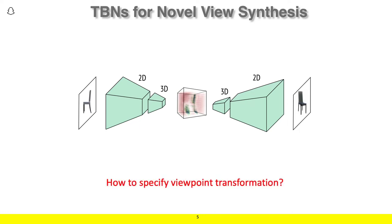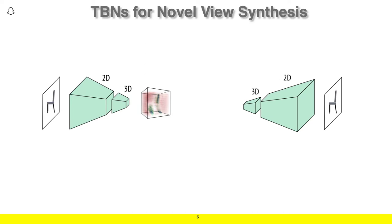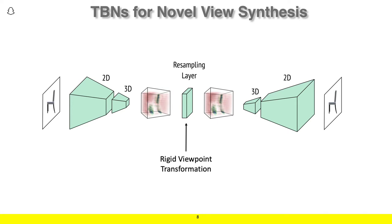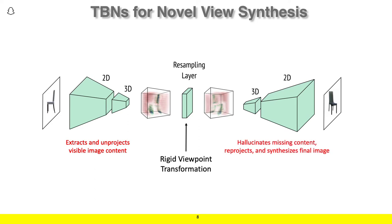Given a different source and target image, a question that arises is how do you specify the viewpoint transformation between the source and target view. We address this by introducing a spatial resampling layer that samples feature vectors from the volumetric bottleneck extracted by the encoder. The rigid transformation corresponding to the relative pose between the source and target views provides the correspondences between the encoded feature volume and the transformed volume passed to the decoder. As only rigid transformations are applied during training, the encoder learns to extract and unproject image content from the input image, while the decoder learns to hallucinate missing content, reproject, and synthesize the final image.